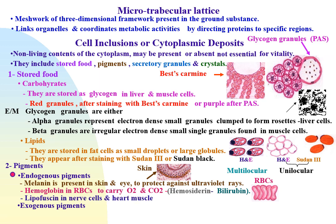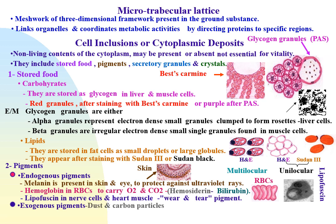Lipofuscin is light brown in color, found in nerve cells and heart muscle, representing waste products and considered the end product of lysosomal activity. Lipofuscin increases with age and is called the wear-and-tear pigment. Exogenous pigments come from outside the body, such as dust and carbon particles found in dust cells of the lung, and tattoo marks found in the skin.